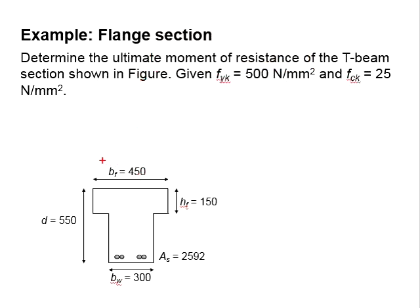The sections have a flange width of 450. The width of the web is 300. The height of the flange is 150, and the depth of the beam is 550. It is given that the steel bar is 500 N/mm², and the compressive strength of the concrete is 25 N/mm².